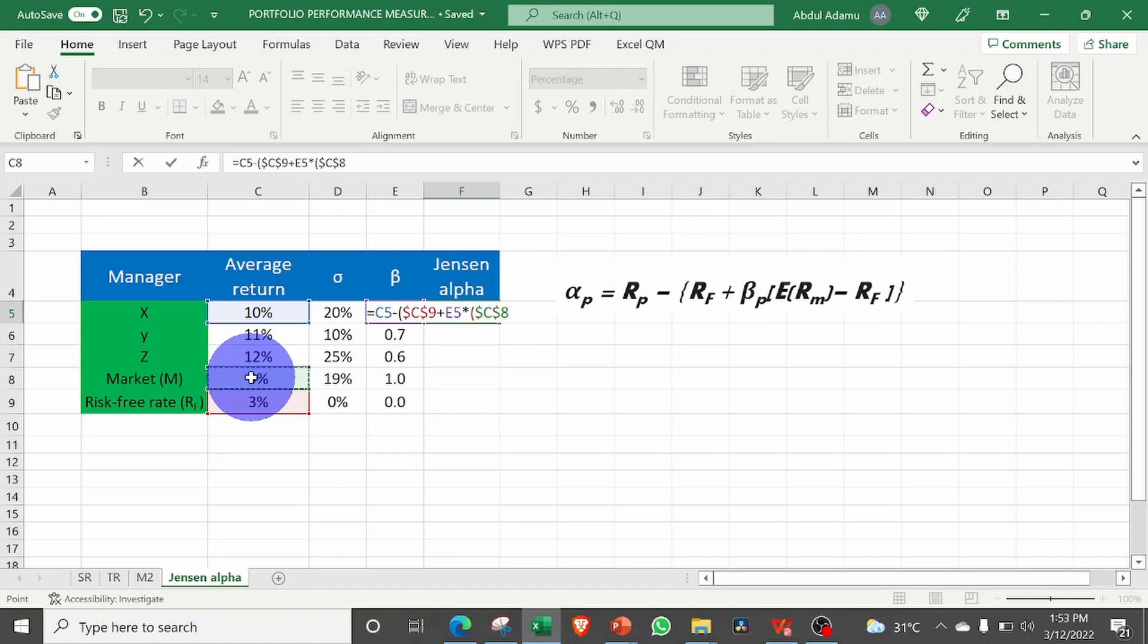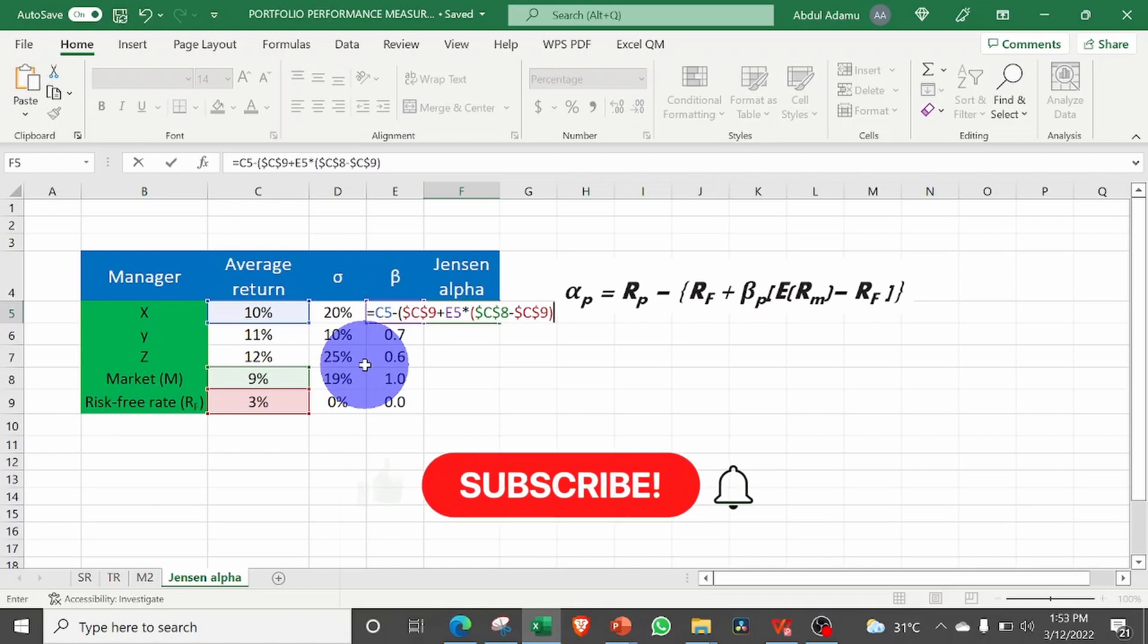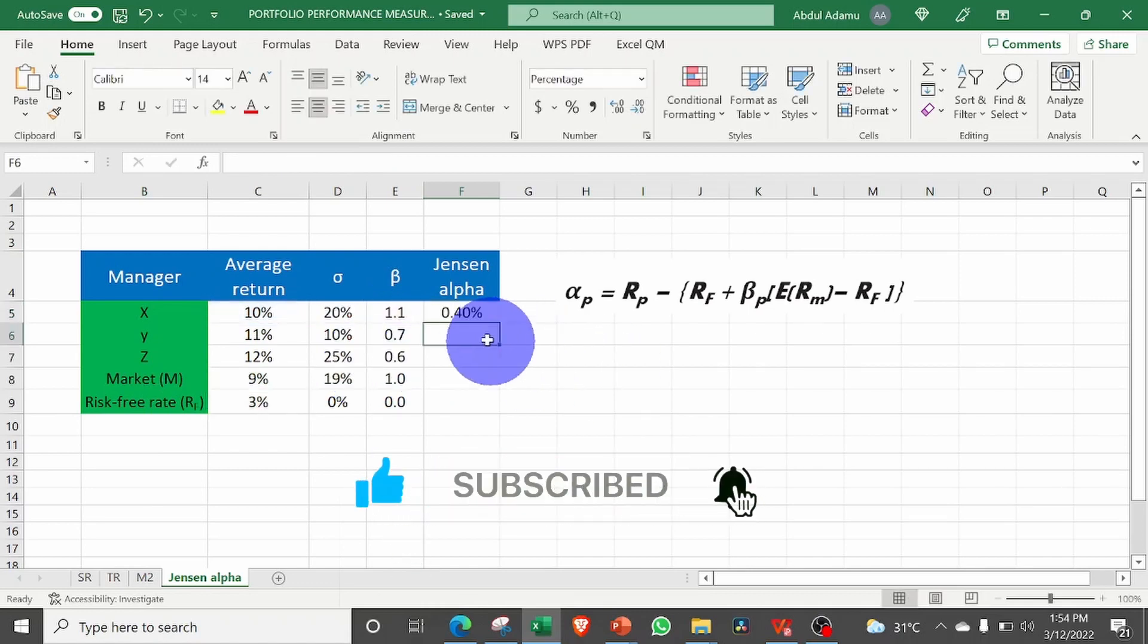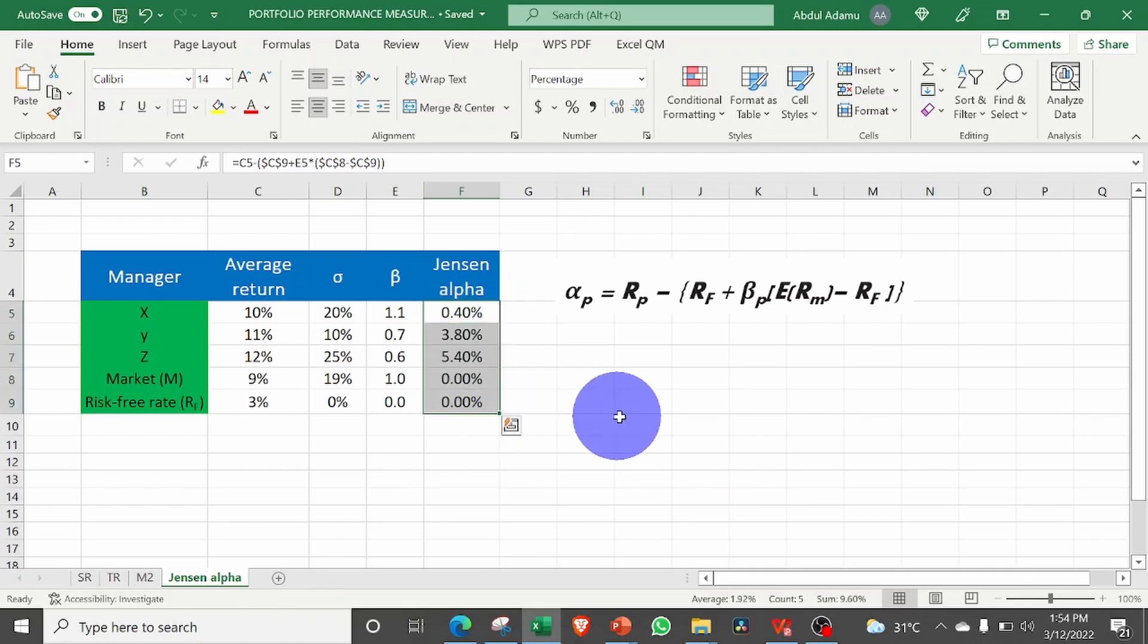Minus the risk-free rate, which we will also lock with F4. Then we close the bracket. Then we close the second bracket also. Then we enter. So that is the value we got earlier. We just copy this down. So when we copy that down, those are our Jensen alphas as we got earlier.